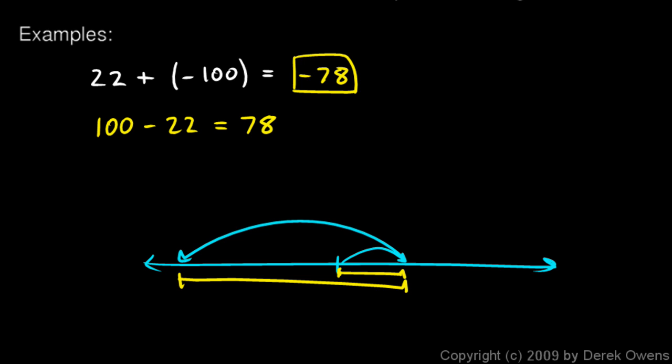then your answer, which is this length right here, from there to there, that length has to be 100 minus 22. And it's negative because we went further to the left than we did to the right. And you don't have to draw out a sketch like this every time. But I'm usually picturing something like that in my mind when I work through problems like this.